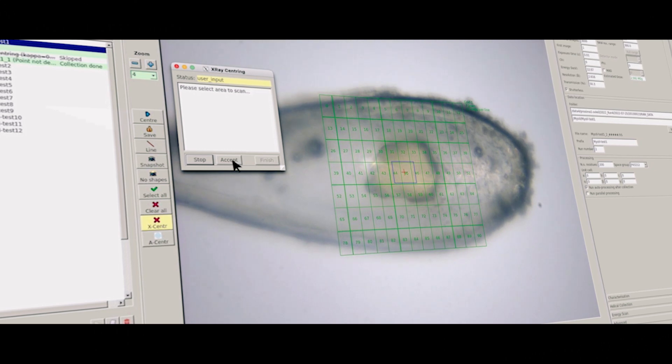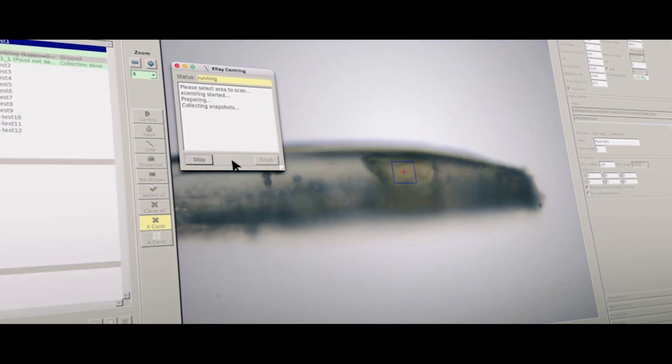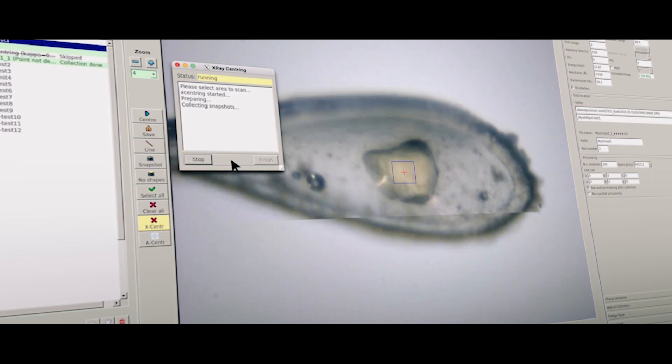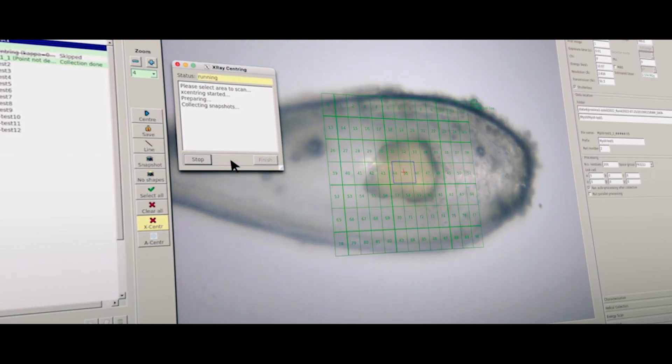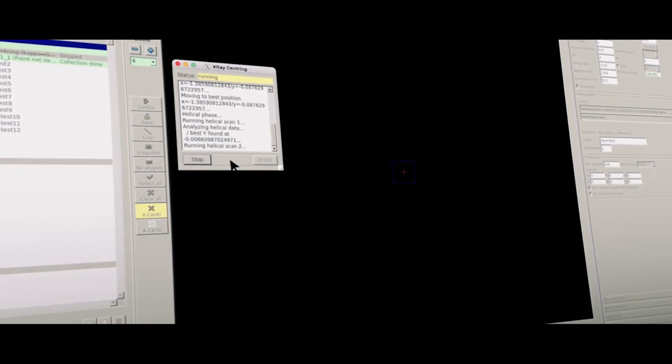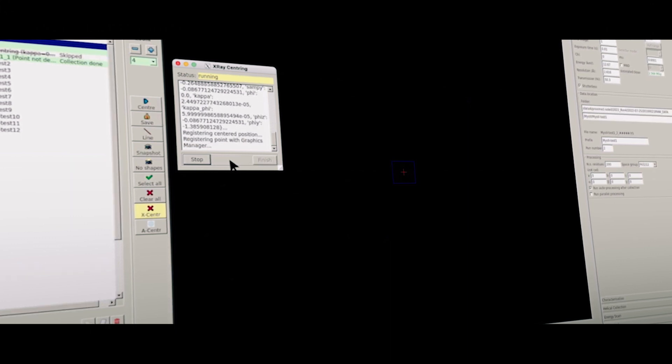MXCuBE v2 includes various protocols such as X-ray centering and grid scans, and has also been recently adapted to offer a user-friendly interface for remote operation of the beamline via NoMachine.